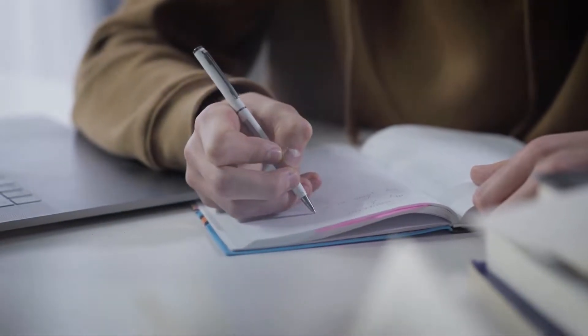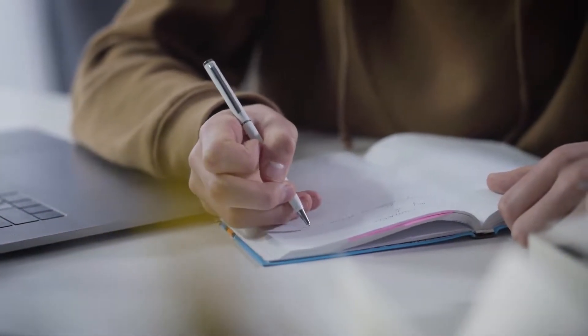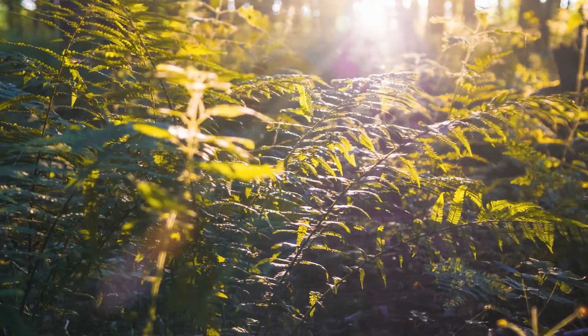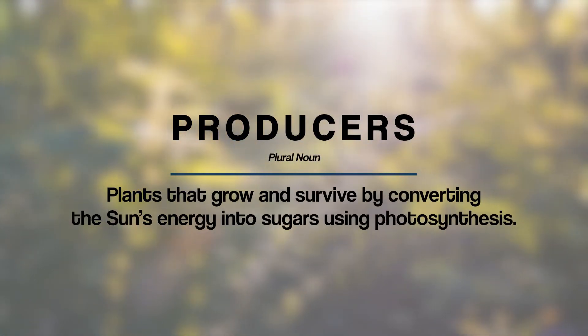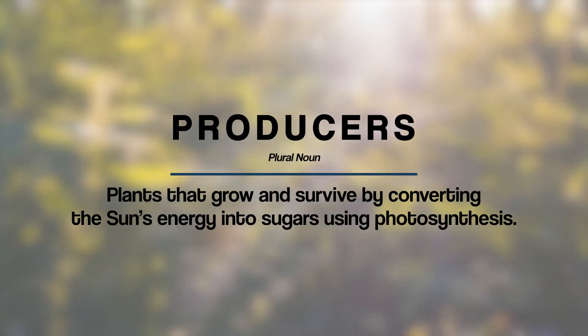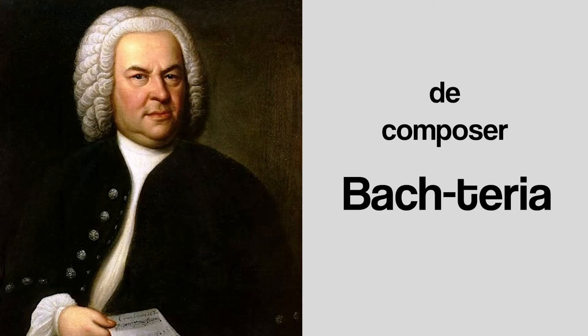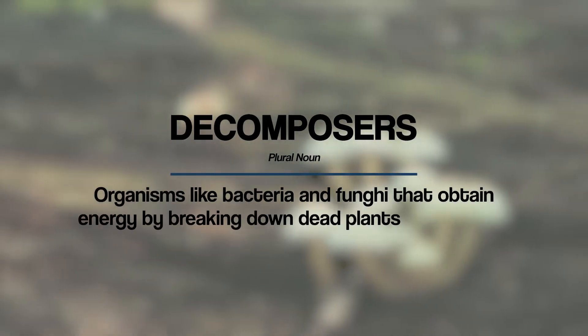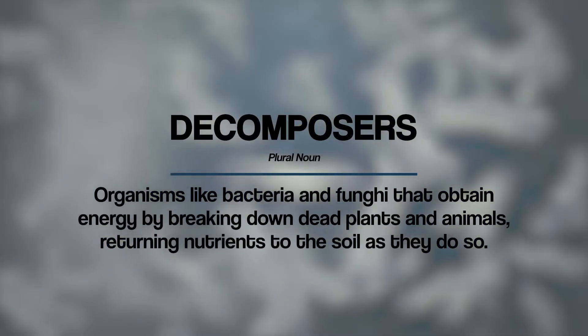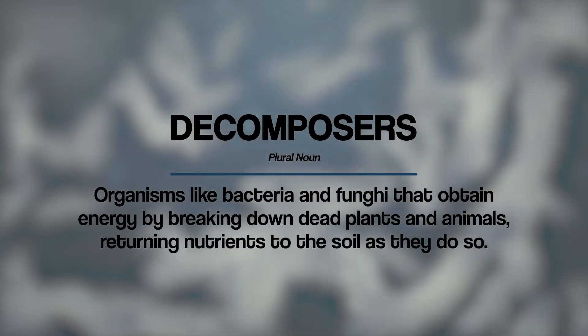There are a few more ecosystem keywords you need to know. Producers are plants that convert the sun's energy into sugars in a process called photosynthesis — they make their own energy to grow and survive. Consumers get their energy by eating other creatures; some eat producers and some eat other consumers. Decomposers, like bacteria and fungi, break down dead plants and animals and return their nutrients to the soil, getting energy in the process. They might not be glamorous, but they are a hugely important part of any ecosystem.